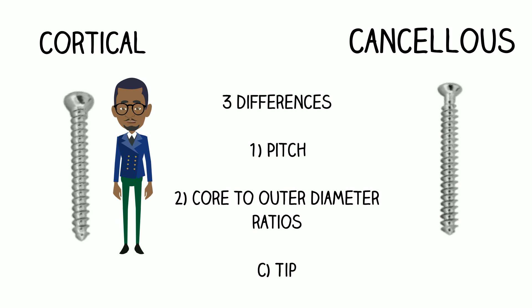Cortical screws have closely spaced threads with smaller pitch, compared with deeply cut and widely spaced threads in cancellous screws. Cortical screws also have a higher ratio of core diameter to outer diameter with shallow threads, and are typically blunt ended.